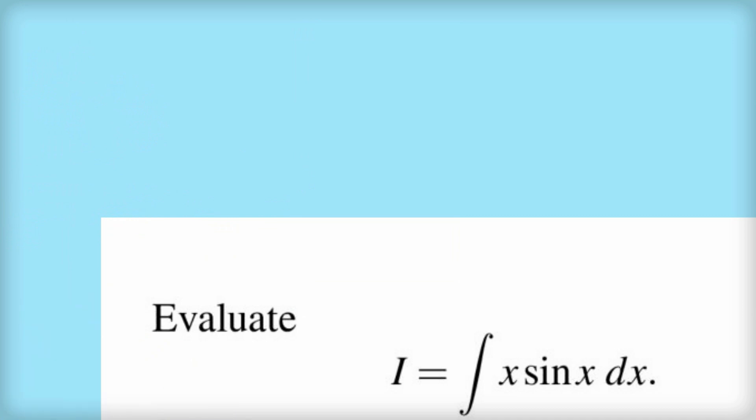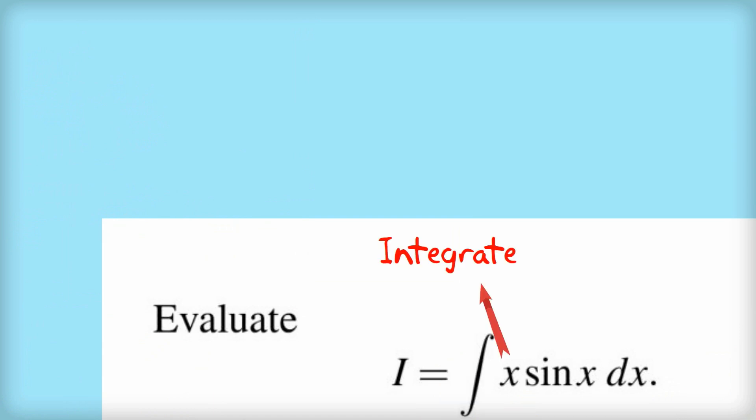Now integration by parts involves taking this integral which is difficult and basically turning it into an easier integral. You need to be a little bit like a chess player here and think a few moves ahead. So here we have the integrand, what we're going to integrate, which is x times sine x. What you want to think is: what happens if I integrate one part of the integrand and take the derivative of the other?